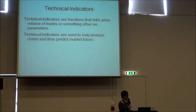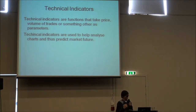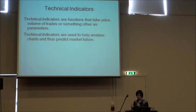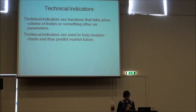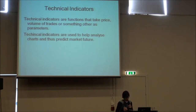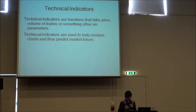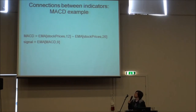Technical indicators are functions that take price, volume of trades, or something other as parameters. These technical indicators are used to help analyze charts and thus predict market future. There are many indicators today — some are common and some are used in very specific situations. It is important to note that many indicators have inner connections with each other. For example, to calculate an indicator called MACD, one needs to calculate three other indicators called EMA.